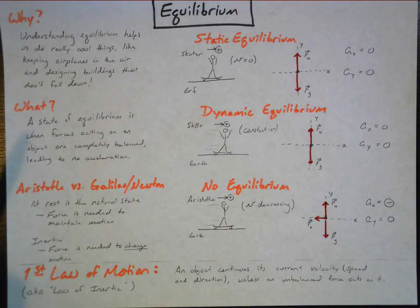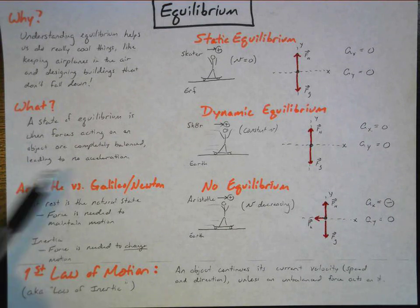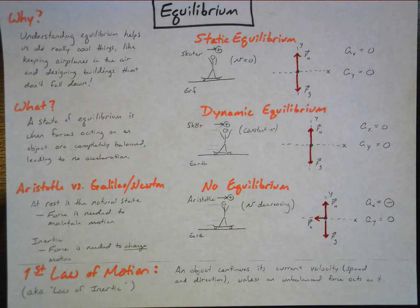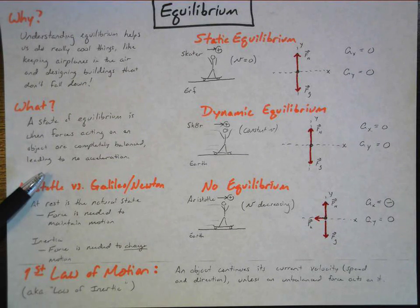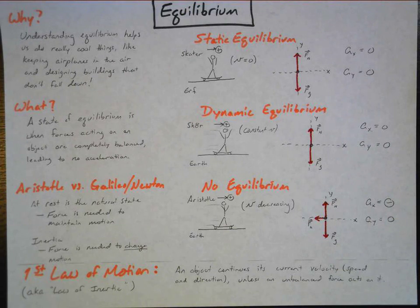So what is equilibrium exactly? A state of equilibrium is when forces acting on an object are completely balanced, leading to no acceleration. Notice what this doesn't say. It doesn't say whether the object is moving or stationary. It doesn't say that there are no forces acting on an object. That would actually be pretty darn impossible. And so it's not about no forces. It's about the forces being balanced or canceling out, if you will.